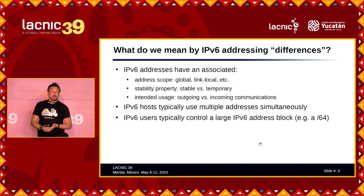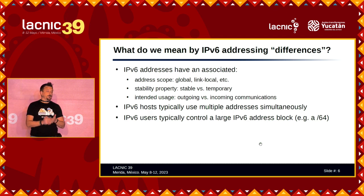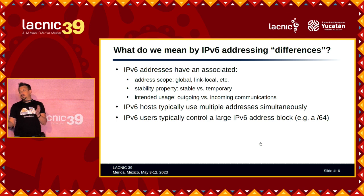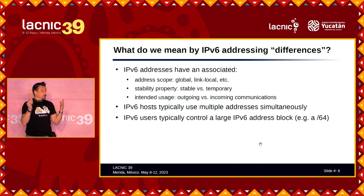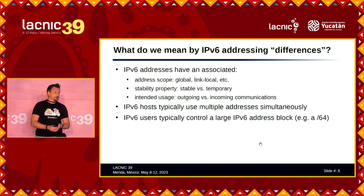A specific feature of the IPv6 world — different from IPv4 — is that IPv6 systems normally use multiple addresses simultaneously. When people start experiencing IPv6, they are surprised by this. One same system, or same interface, uses multiple addresses with multiple properties or combinations.